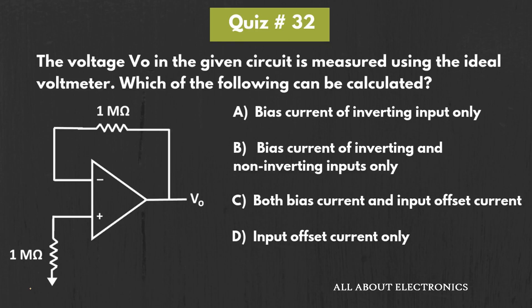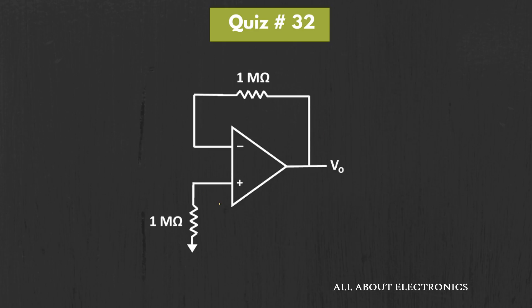In this quiz, we have been given this op-amp circuit. In this circuit, the output voltage Vout is measured using the ideal voltmeter. In the given scenario, we have been asked which of the following things can be calculated from this output voltage. So let's find out what can be measured from this output voltage.